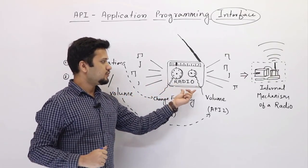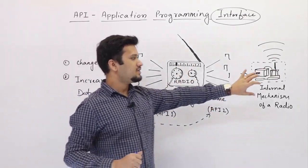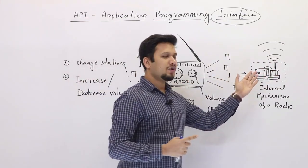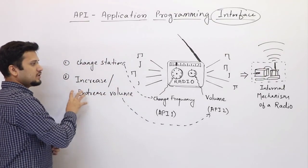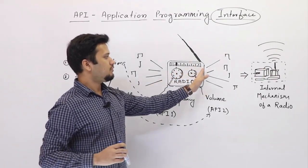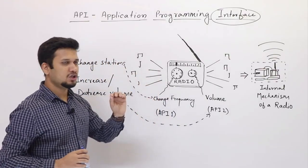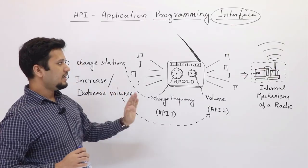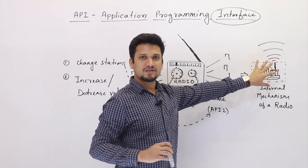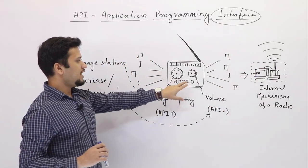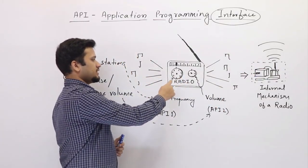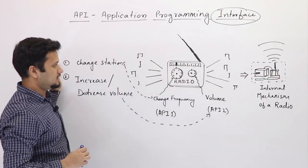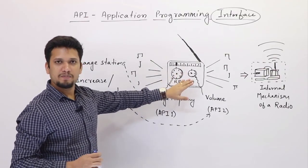So this radio, if you consider it as a system, it has some internal mechanism, but as the user you are not bothered about how it works internally — you are only bothered about what you want to achieve. So this system provides a simple interface to you so that you can achieve your task, and it abstracts all the internal mechanism within itself. This radio provides two knobs with which you can achieve your desired result.